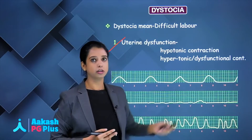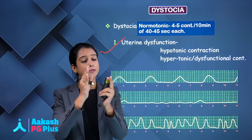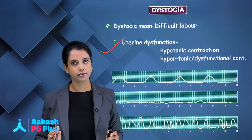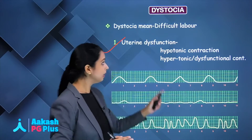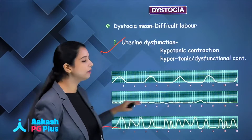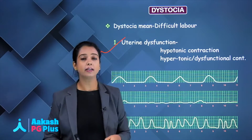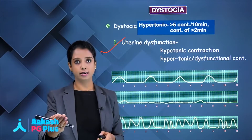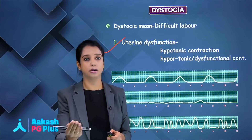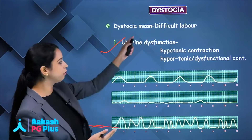Normal contractions are those occurring 4 to 5 contractions in 10 minutes, each contraction of 40 to 45 seconds. Hypotonic contraction is when neither the intensity is good nor the frequency is good. Hypertonic means more than 5 contractions in 10 minutes, or any one contraction lasting more than 2 minutes — that is hypertonic contraction, and it can lead to difficult labour.